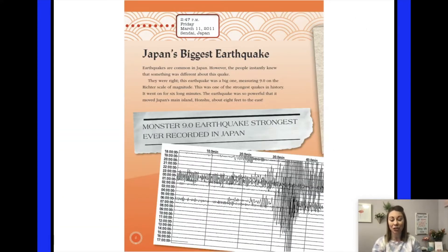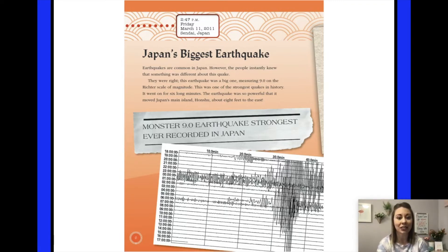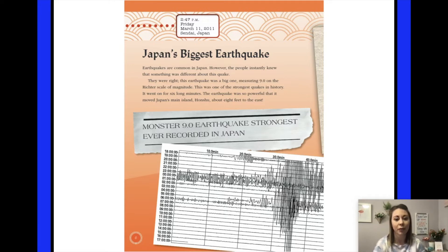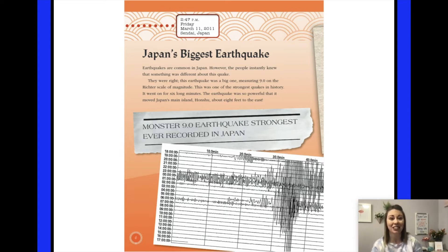Japan's biggest earthquake. Earthquakes are common in Japan, but the people instantly knew that something was different about this quake. This earthquake was a big one, measuring 9.0 on the Richter scale of magnitude — one of the strongest quakes in history. It went on for six long minutes. The earthquake was so powerful that it moved Japan's main island, Honshu, about eight feet to the east. Imagine a whole island just got shifted eight feet over.